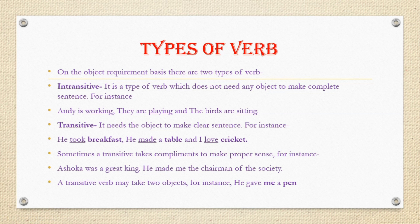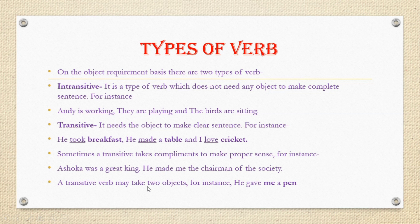A transitive verb may also take two objects at once. For example: 'He gave me a pen' — here there are two objects: 'me' and 'pen.' So a transitive verb can take two objects in a single sentence.